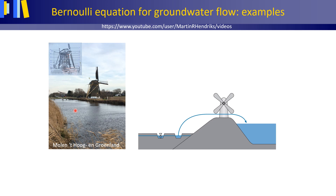If we would not pump out the water, the groundwater level in the polder would rise because of upward seepage. Groundwater flow can go from a lower to a higher elevation, so water can flow from a lower to a higher elevation.